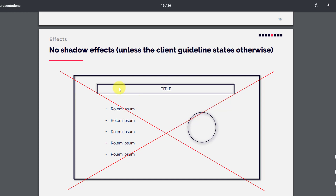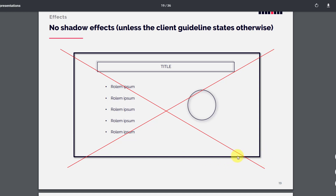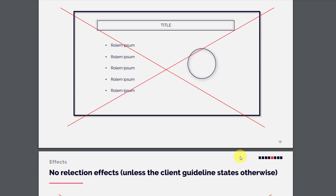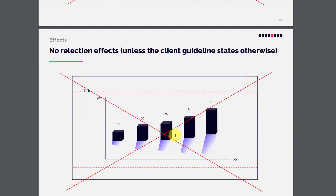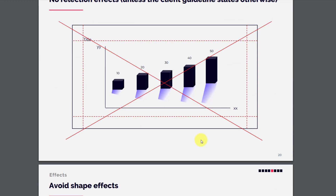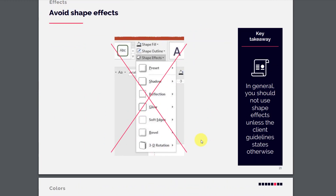No shadow effects unless the client guideline states otherwise — you can see a box shadow here, and shadow effects should be avoided. No reflection effects either — same rule applies. Avoid all shape effects in general. The takeaway is: do not use shape effects unless the client guideline specifically states otherwise, such as asking for a glow or shadow on a button.